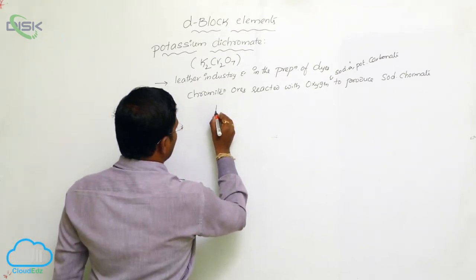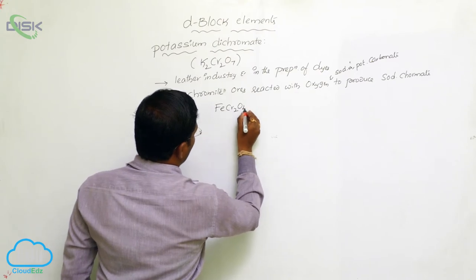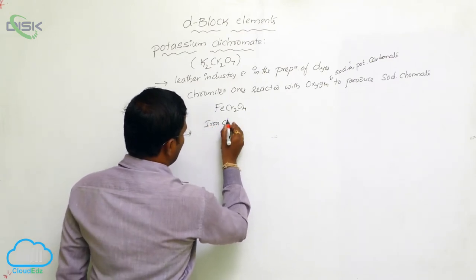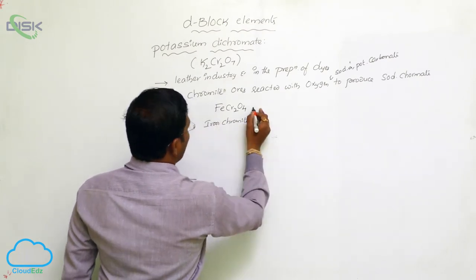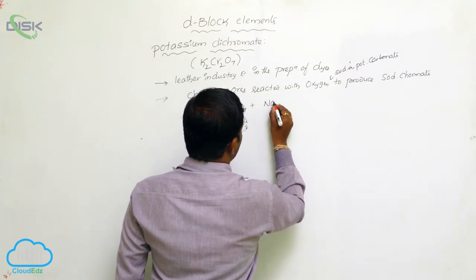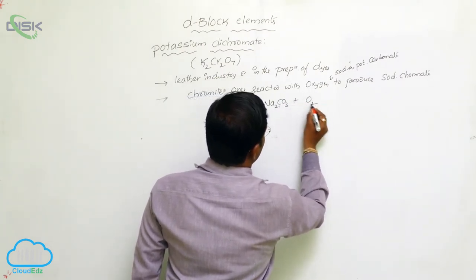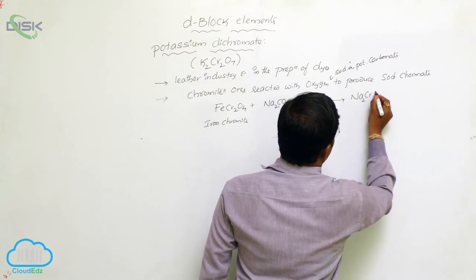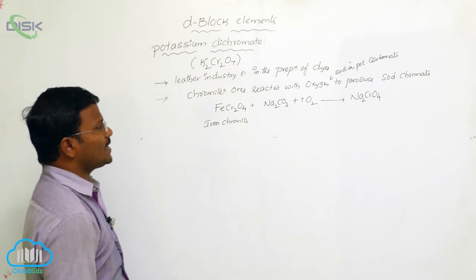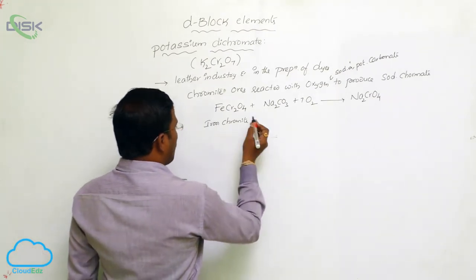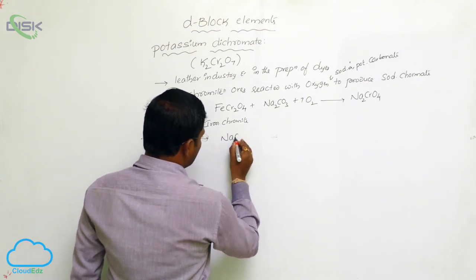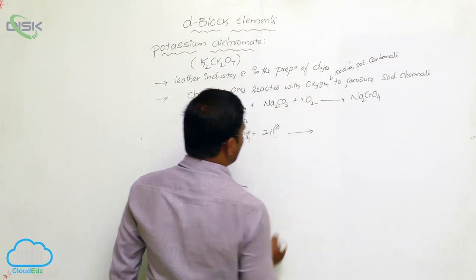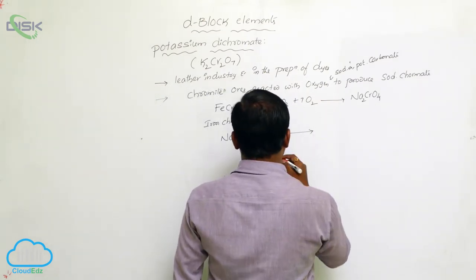The chemical equation for this reaction: iron chromite (FeCr2O4) reacts with sodium carbonate and excess oxygen to yield sodium chromate (Na2CrO4). The formed sodium chromate, in the presence of an acidic medium — when reacted with concentrated or diluted sulfuric acid — converts into sodium dichromate (Na2Cr2O7) plus water.